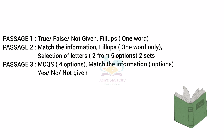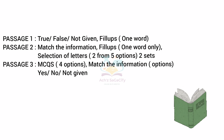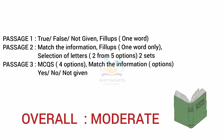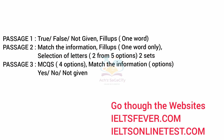Moving on to the last passage, you can expect MCQs with four options, match-the-information type questions with options in a box, and along with that Yes/No/Not Given type questions, or True/False/Not Given type questions once again. Passage 3 can be set as easy to moderate level. Practice with different materials and go through websites like ieltsfever.com or ieltsonlinetest.com — you'll get enough materials from there.